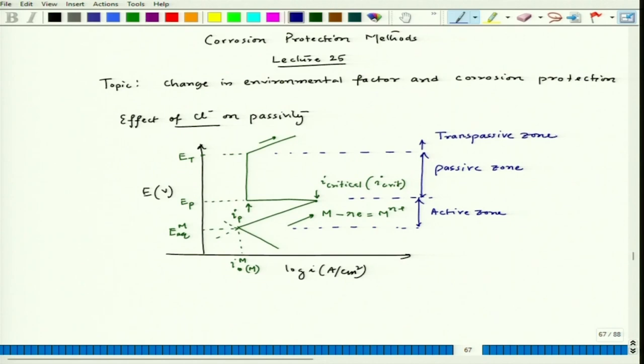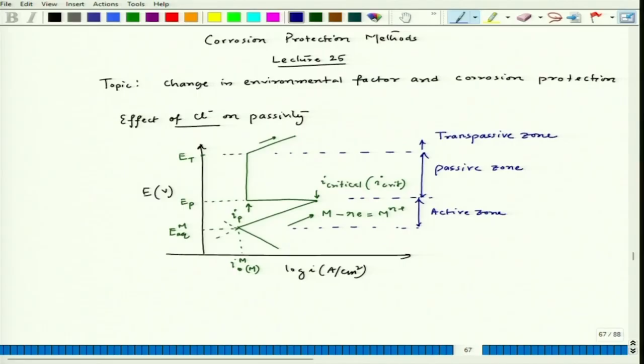What sort of behavior that metal will show in a particular environment — containing some oxidizer or chloride ion — will be decided based on how the cathodic polarization line interacts with this anodic polarization plot showing active-passive behavior. It is called active-passive behavior because when we start the polarization, it will first go through the active zone, then achieve passivity, and then again break into the transpassive zone.